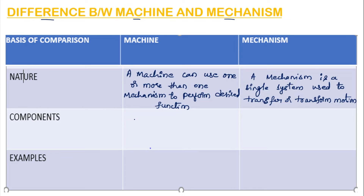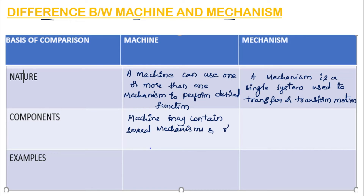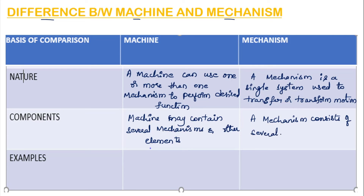Regarding components, a machine may contain several mechanisms and other elements also. But in a mechanism, it consists of several links which are joined together.